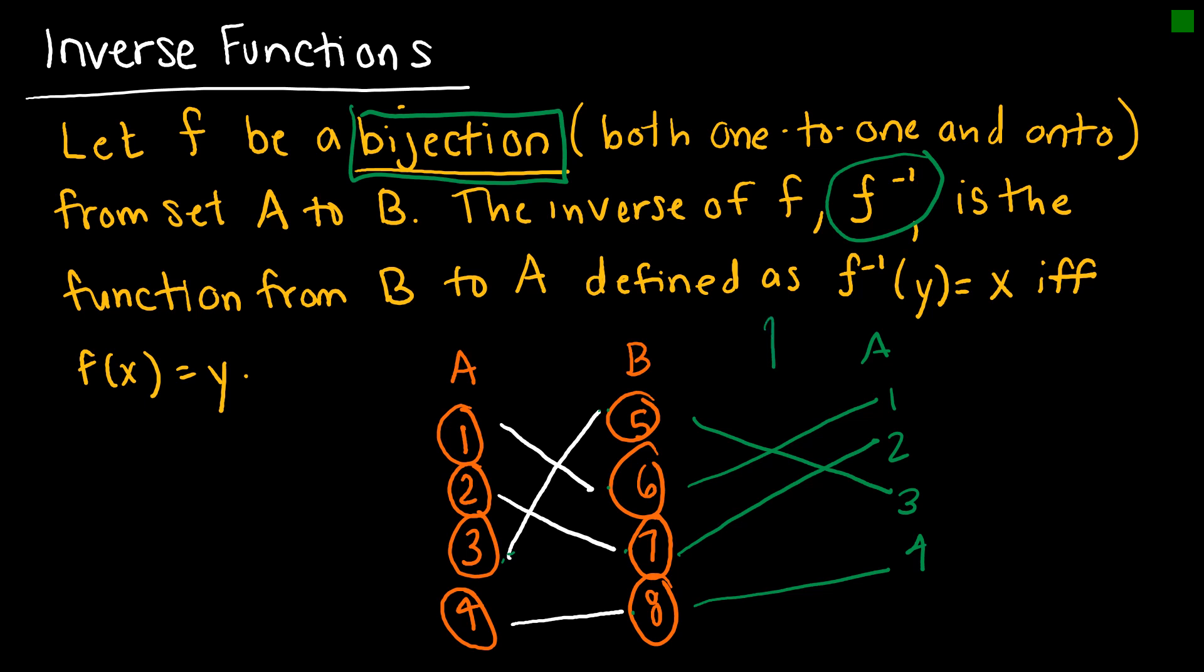So this function would be considered the inverse function as it maps those elements of B back to the elements of A. And so again, we write that the inverse function would map Y to X if and only if the function mapped X to Y. So it's essentially undoing it. It's the inverse.